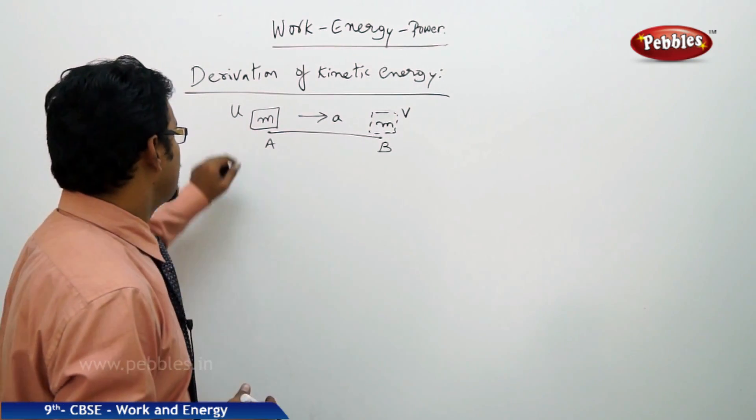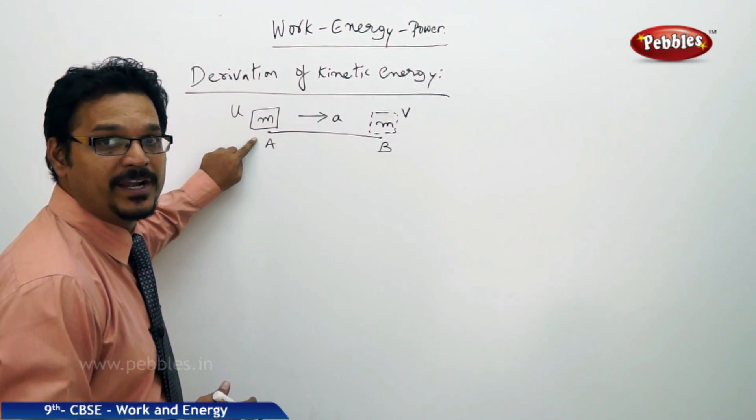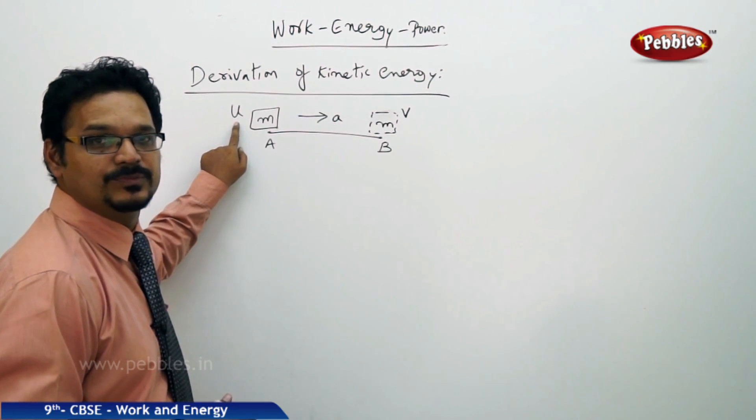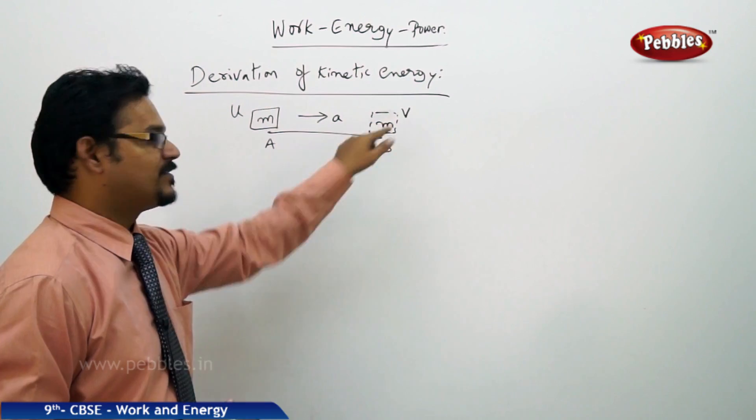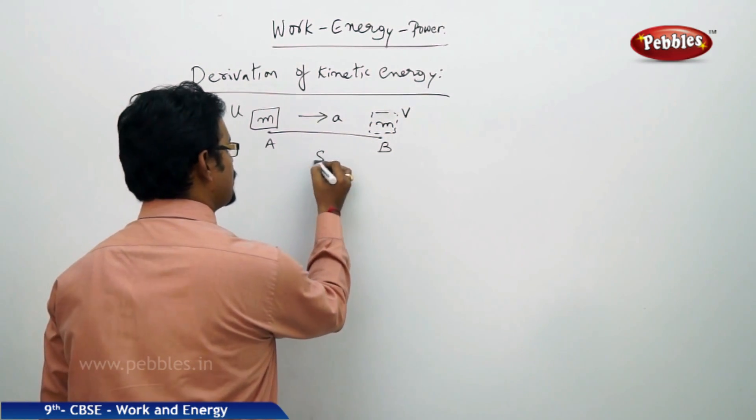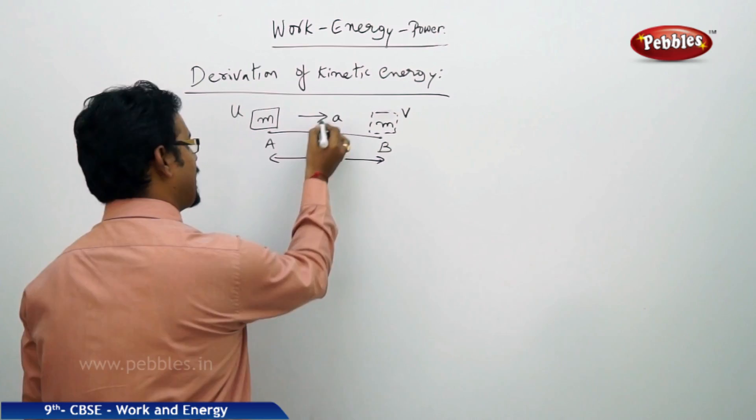The first one, derivation of kinetic energy. Let us take a body of mass M at point A with initial velocity U, and it has traveled to point B with final velocity V. Let the distance traveled be S with acceleration A.